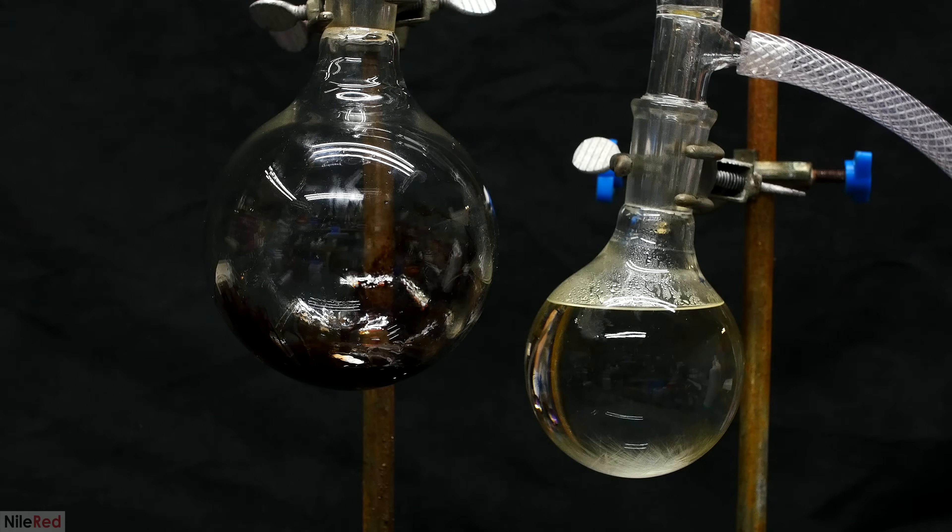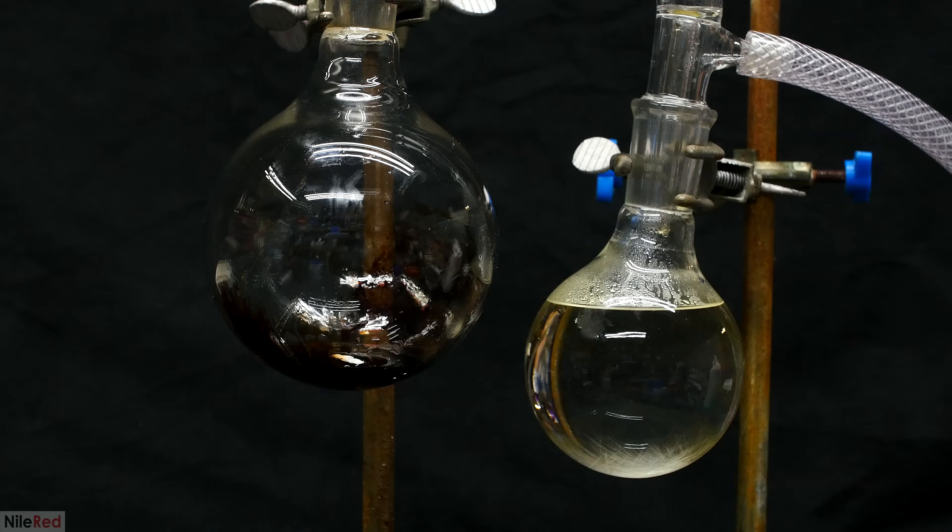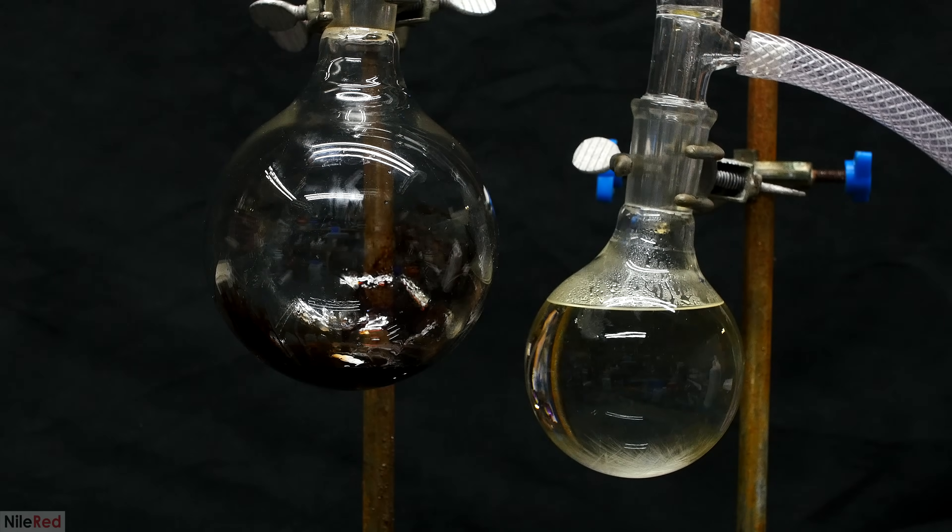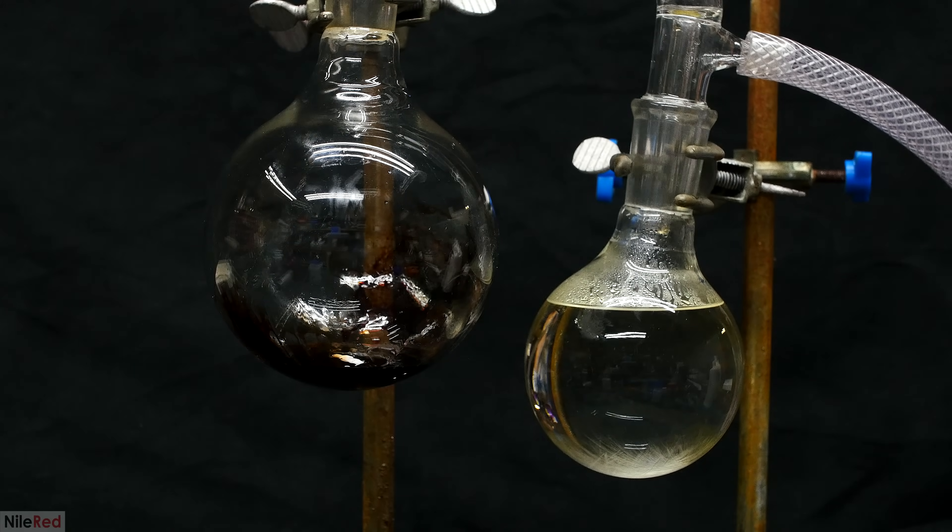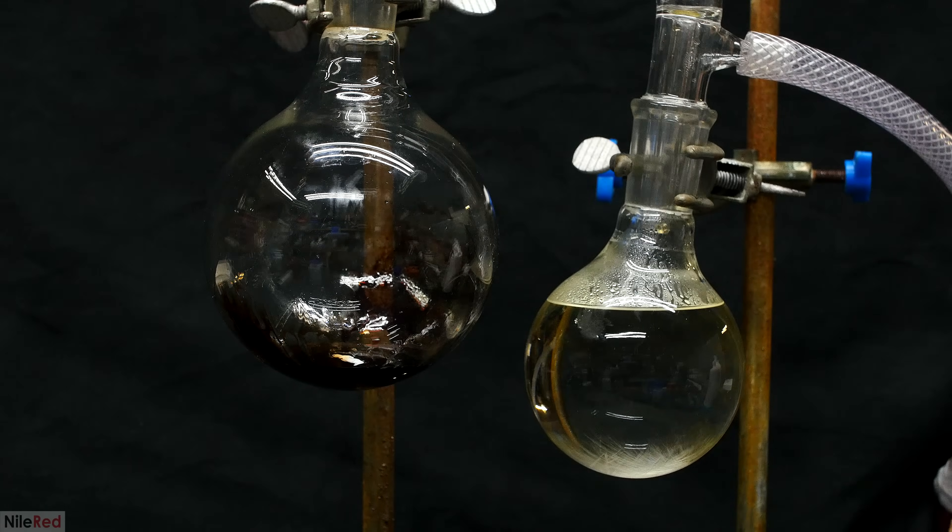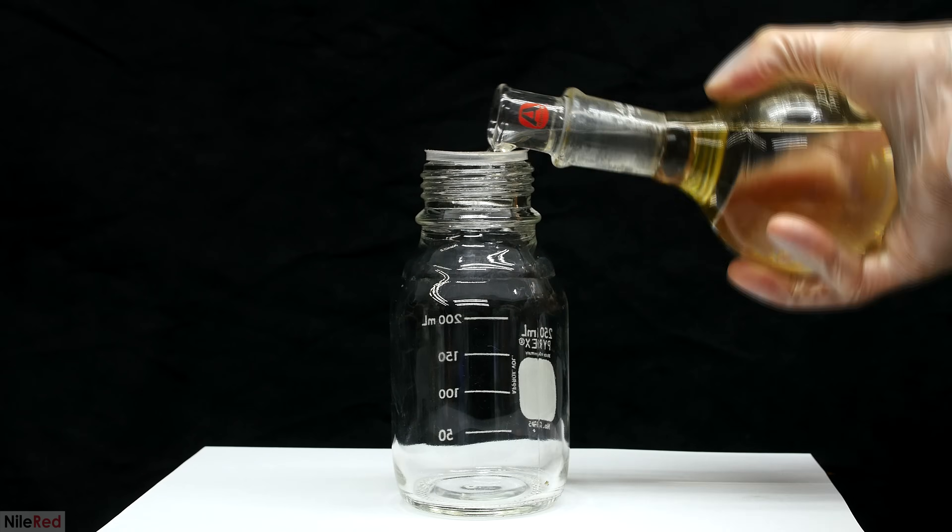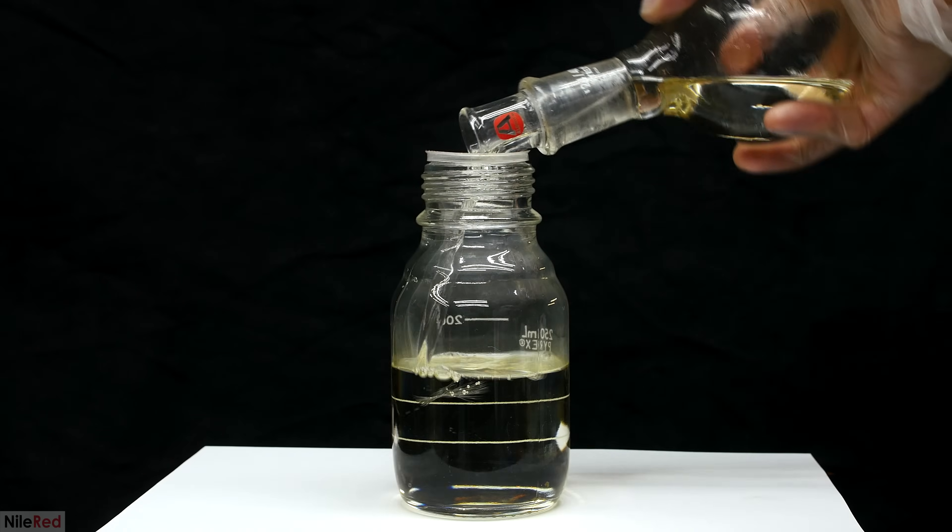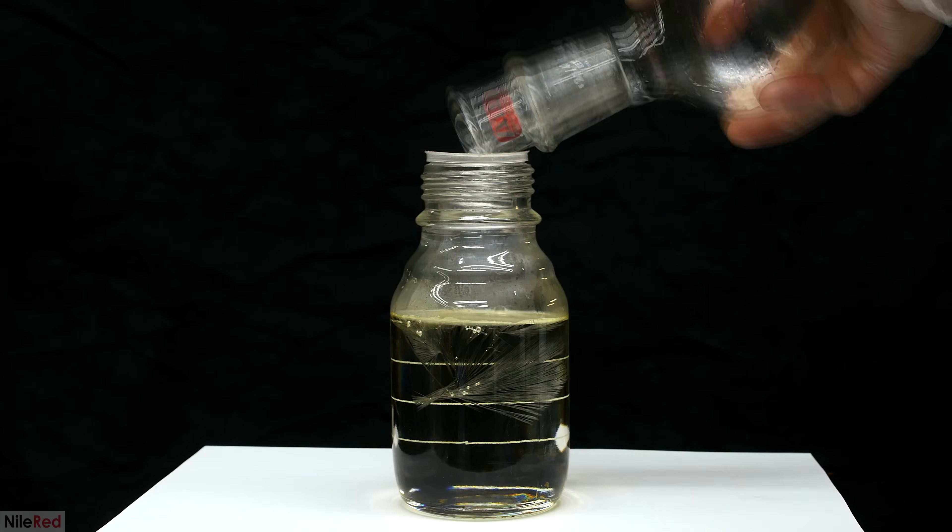If we look at the bottom of the receiving flask, we can see that the phenol is already starting to crystallize, so it's probably a good idea to transfer it to a bottle before it completely solidifies in the flask. The phenol is poured into a pyrex bottle, and we wait for it to crystallize.